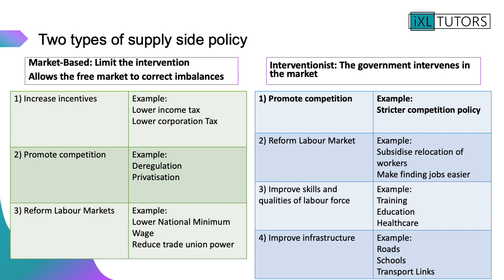An interventionist policy is where the government intervenes in the market, and there are four different areas. They can promote competition by imposing or enforcing stricter competition policy. They can reform the labour market by subsidising the relocation of workers, encouraging them to move to different areas or making it easier to find jobs. They can improve the skills and qualities of the labour force by improving the quality or quantity of training, education, or healthcare. Finally, they could improve infrastructure — roads, schools, or transport links.